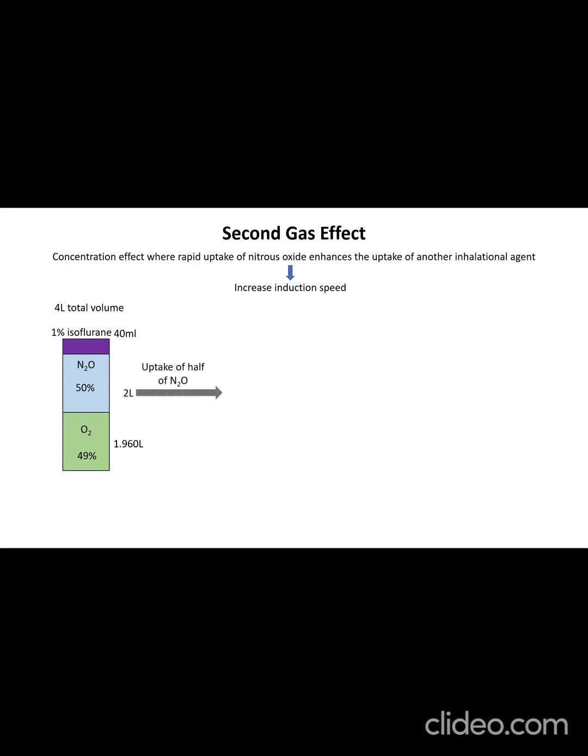As half of the nitrous oxide diffuses quickly into the blood, the alveolar volume reduces to 3000 milliliters. The new alveolar concentration of isoflurane is now 40 divided by 3000, or 1.33%. The concentration of nitrous oxide doesn't reduce by half and is now 33.3%, and like isoflurane, the oxygen concentration increases to 65.3%.